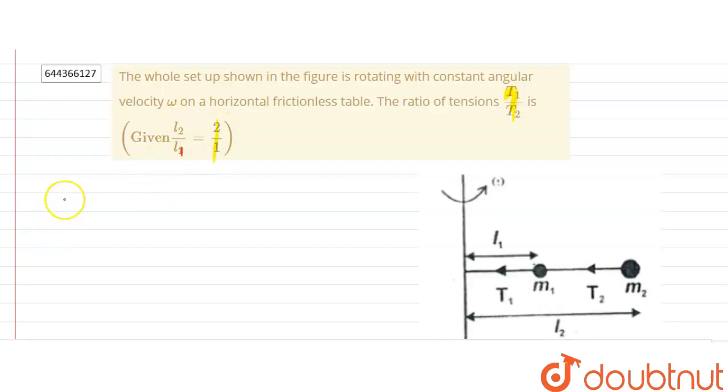Now we will calculate first of all T1 and T2. In general, our tension is given as M omega square L. For T1, it will be M1 omega square L1 plus M2 omega square L2. Our T2 will be M2 omega square L2. This is our equation 1 and this is our equation 2.